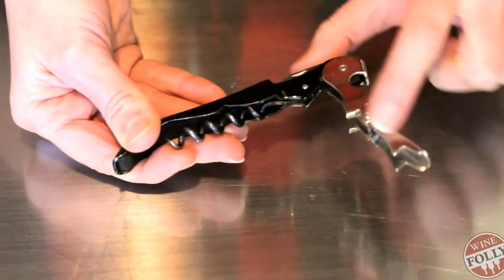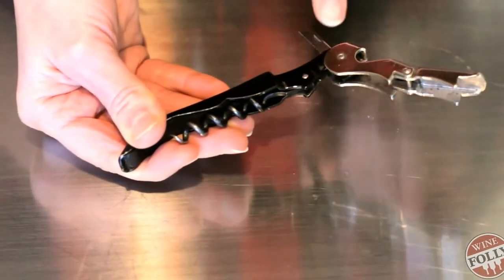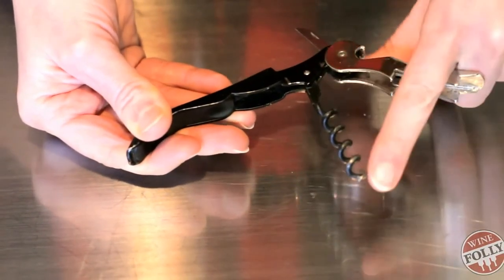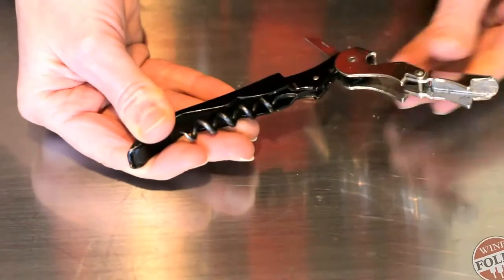It's easy because it has a two-step lever, a serrated foil cutter, and a thin screw or spiral. The whole thing is small, and I like it because it costs only about six dollars.